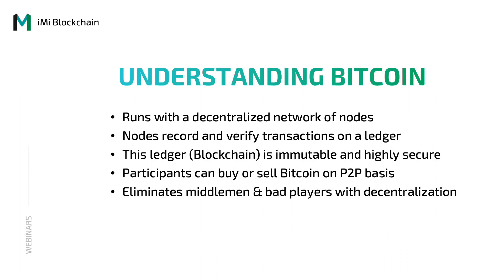Now that we have brushed over some characteristics of Bitcoin, let's understand Bitcoin some more. Bitcoin runs with a decentralized network of nodes. These nodes record and verify the transactions on a ledger. This ledger is immutable and highly secure. Bitcoin ensures that participants can buy or sell Bitcoin on a peer-to-peer basis, as it eliminates middlemen and third parties through decentralization.